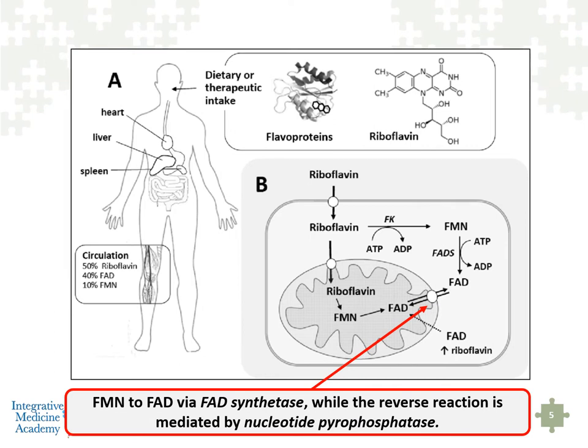Riboflavin gets into the cells and is used within the mitochondria to act as a very important cofactor within the electron transport chain. We'll show that to you in a moment.